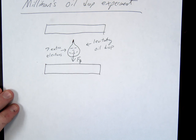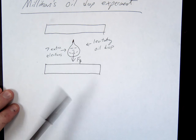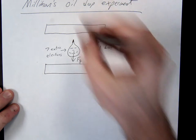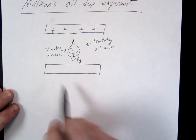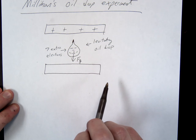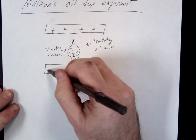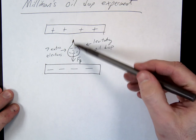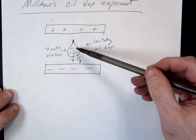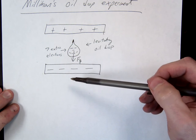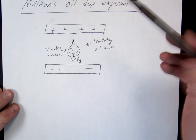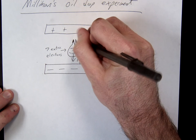So what did he have to do to levitate this oil drop? He had to charge up the plates. What kind of charge should we put on the top plate? Positive. Now, if you put negative on the top or negative on the bottom, it's just going to go to the top, or they would just repel each other, but gravity is still going to pull it down. So what you want is the positive attracting and the negative repelling so that there's a net force going up on the oil.